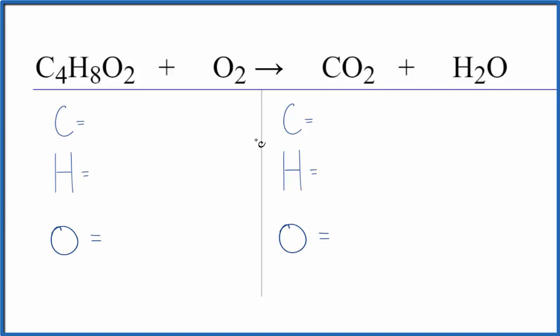So to balance this reaction let's first count the atoms up. We have four carbons, eight hydrogens, and then two oxygens plus, don't forget these two oxygens here. Those are important. So we have four total oxygens on the reactant side of the equation.